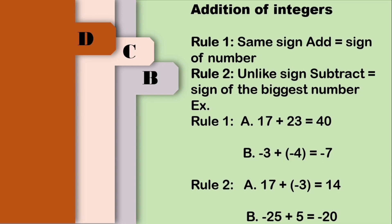Kung nahihirapan kayong sundan itong rules na to, meron akong i-de-discuss na isang method, at ito yung nag-work sa akin since first year high school ako. Tandaan lang: sa isang tindahan or canteen, utang means negative, positive means pera. For example, negative 3 plus negative 4 — meron kang 3 pesos na utang sa isang tindahan, at nag-utang ka ulit ng 4 pesos, so ilan na yung utang mo? That is negative 7.